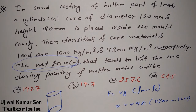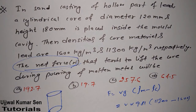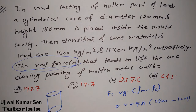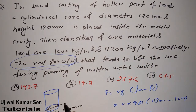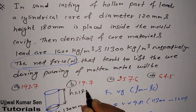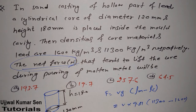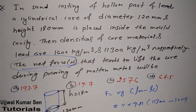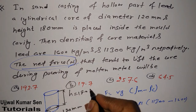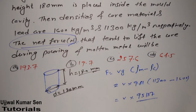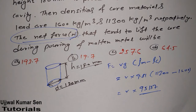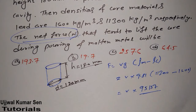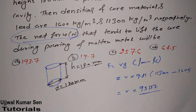In sand casting of a hollow part of lead, a cylindrical core has a diameter of 120 mm and a height of 180 mm. We need to find the volume. The volume must be in SI units, meaning we'll need to convert from mm³ to m³. A cylindrical core with height 180 mm and diameter 120 mm — the most important thing to find is the volume of the cylinder.